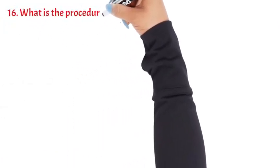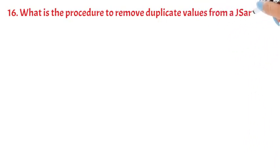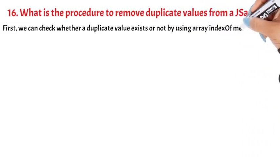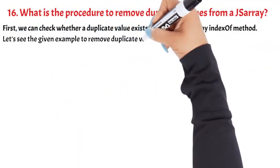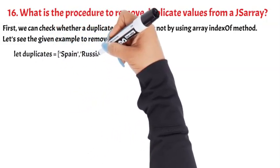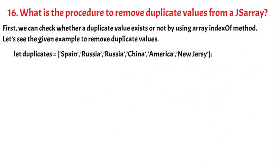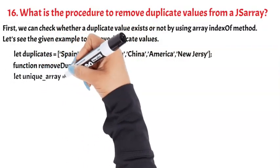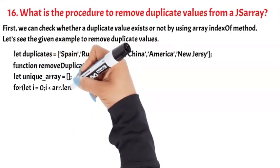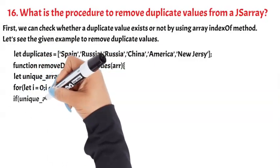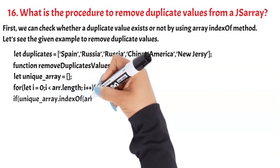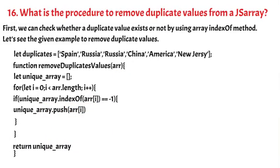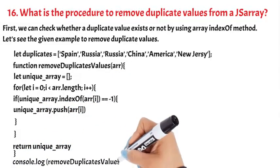Question 16: What is the procedure to remove duplicate values from a JS array? First, we can check whether a duplicate value exists or not by using array indexOf method. Let's see the given example to remove duplicate values. Let duplicates = ['Spain', 'Russia', 'Russia', 'China', 'America', 'New Jersey']. Function removeDuplicates. Let unique_array = []. For let i = 0; i < array.length; i++. If unique_array.indexOf(array[i]) === -1, unique_array.push(array[i]). Return unique_array. console.log(removeDuplicates(duplicates)).